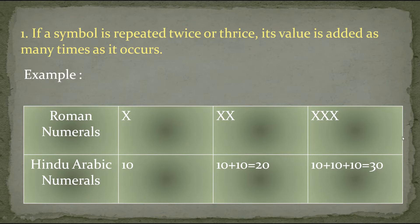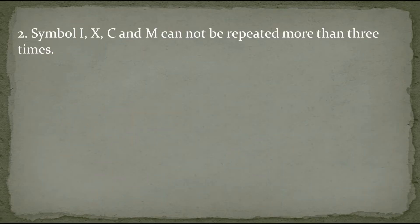Now let's see the second rule. The second rule says that symbols I, X, C and M cannot be repeated more than 3 times. These four symbols — I, X, C and M — we can't repeat more than 3 times.